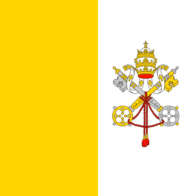The flag of Vatican City was adopted on June 7, 1929, the year Pope Pius XI signed the Lateran Treaty with Italy, creating a new independent country governed by the Holy See.